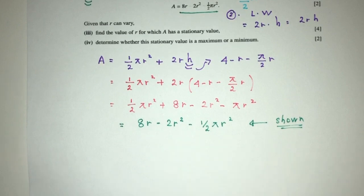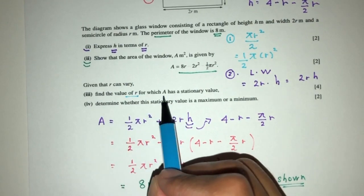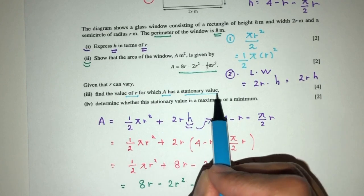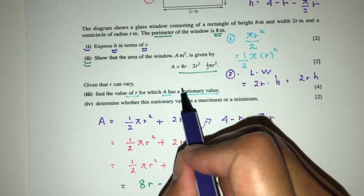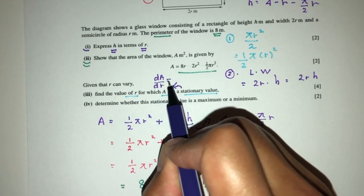Now, part 3. Given that r can vary, we have to find the value of r at which A has a stationary value. So pretty easy. As we know, at the stationary value, we have to have dA over dr equate to 0. So let's find that.